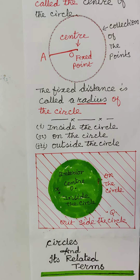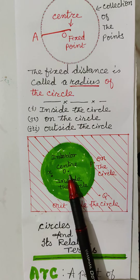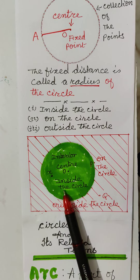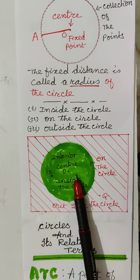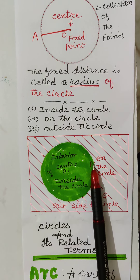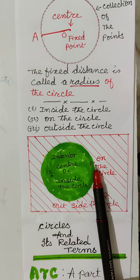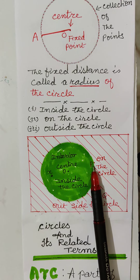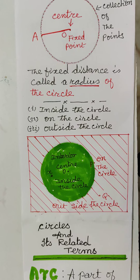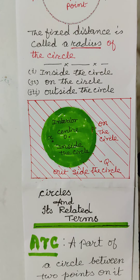A circle can be divided into three regions. The region shown in green is known as the interior of the circle, and all points lying in the green area are known as inside the circle. The points which are on the circumference are known as on the circle — here point P is on the circle. The points outside the circle, such as point Q, are known as outside the circle.